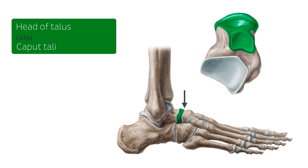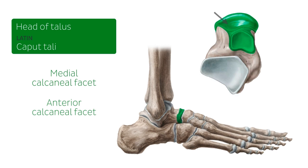There are two articular surfaces on the plantar surface of the head of the talus, separated by smooth ridges. The medial calcaneal facet, which is convex and semi-oval in shape, rests on the plantar-calcaneo-navicular ligament, also known as the spring ligament. The anterior calcaneal facet, which is somewhat flattened, articulates with the anterior aspect of the calcaneus. The surface articulating with the navicular bone is also visible here.